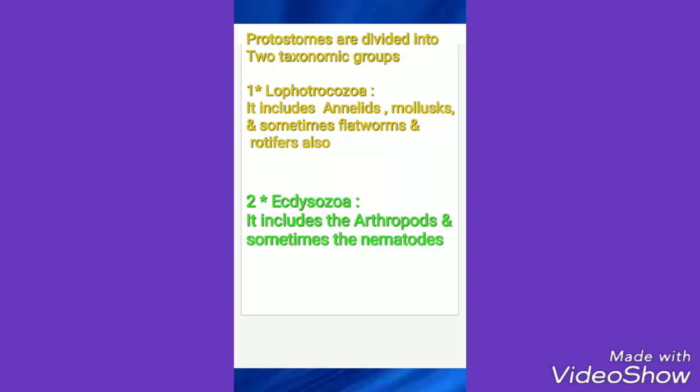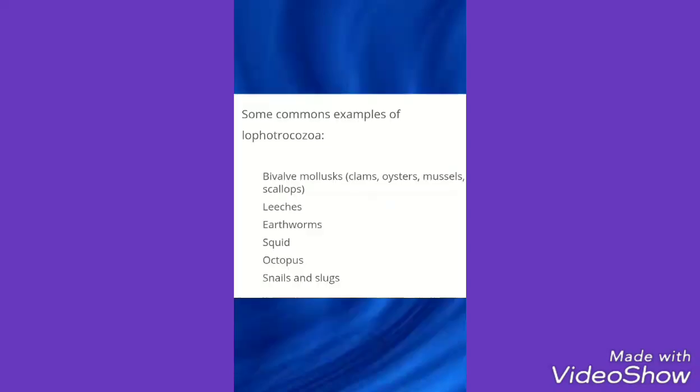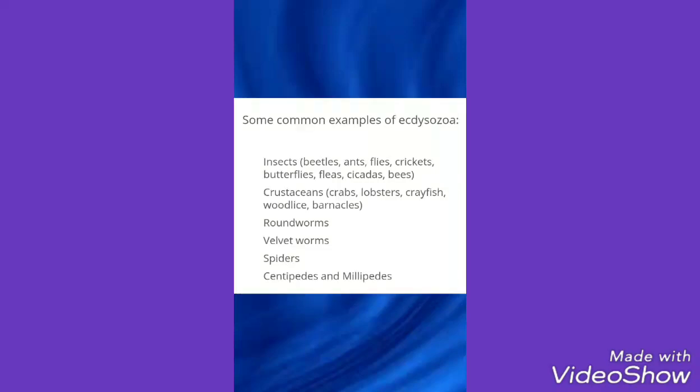Some examples of the group lophotrochozoa are snails, squids, leeches, etc. Examples of the group ecdysozoa are insects like ants, crickets, millipedes, centipedes, and spiders.